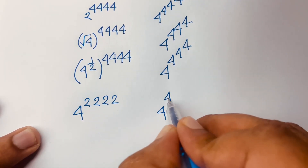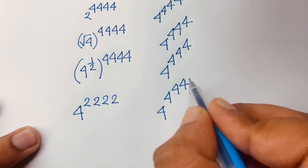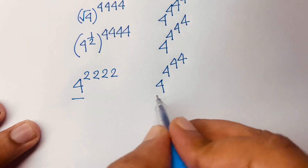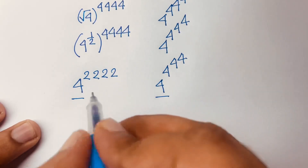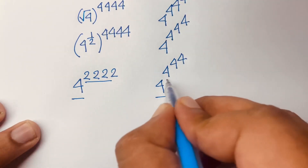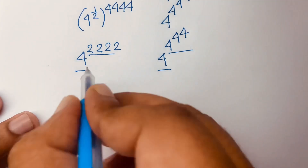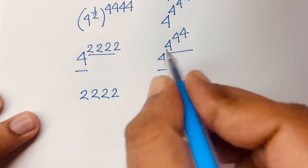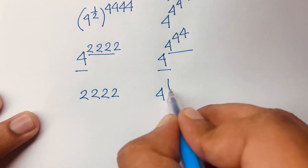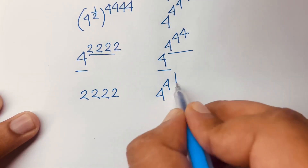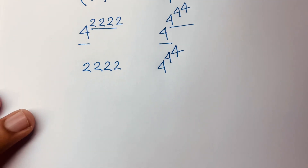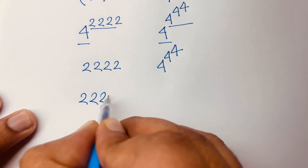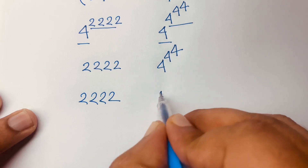Now look — the bases are the same on both sides: both are base 4. So we only need to compare the exponents. The left side has exponent tower 2, 2, 2, 2 and the right side has 4 to the power 4, power 4. We compare these exponent towers.